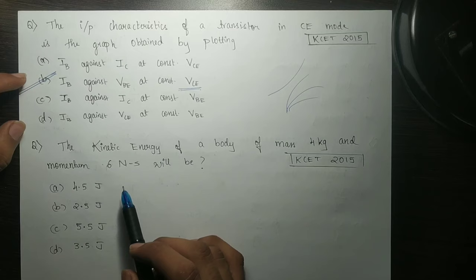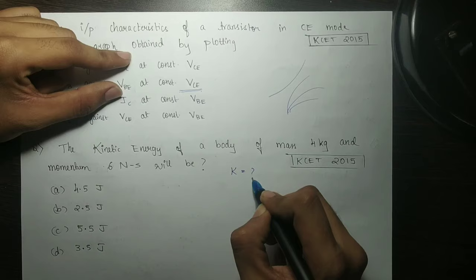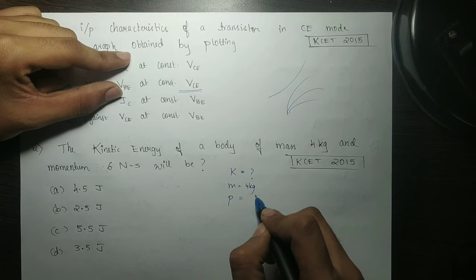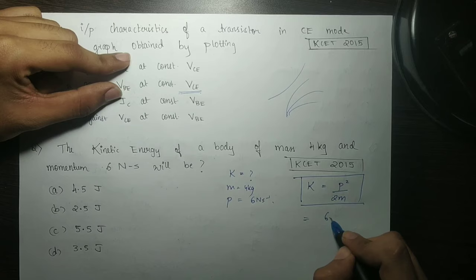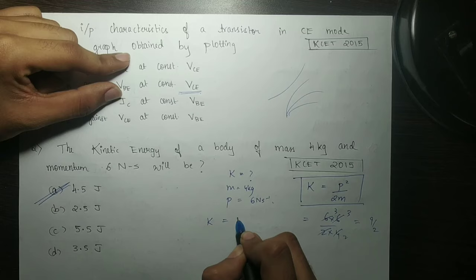Last question. The kinetic energy of a body of mass 4 kg and momentum 6 Nps will be. So hang on, kinetic energy is equal to, mass 4 kg and momentum at the moment, the kinetic energy will be 6 Nps. Actually, we have a direct formula: K is equal to P squared by 2M. Already the formula is derived. So we have to use this formula. 6 Nps squared is 36. So 36 by 2 times 4 is 9 by 2 is 4.5 J. So 4.5 J. The kinetic energy is equal to half Mv squared.